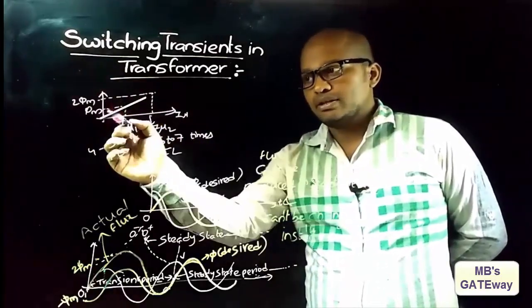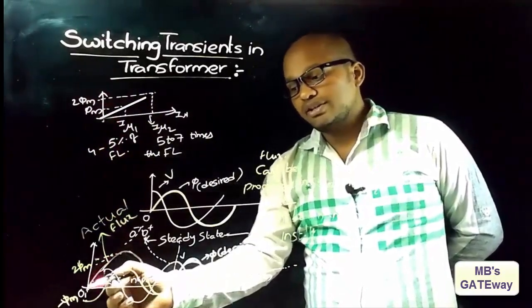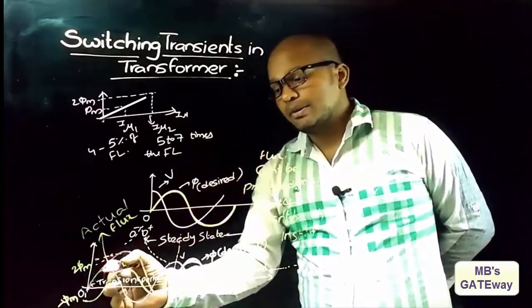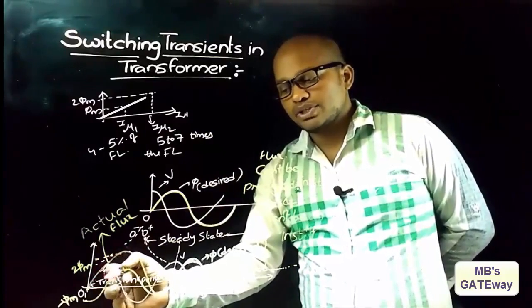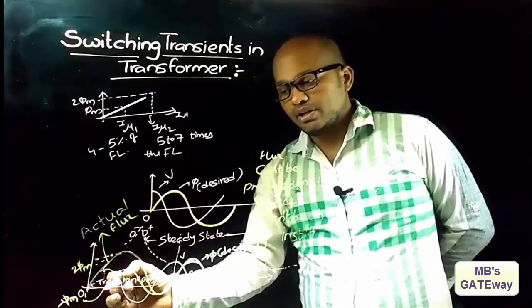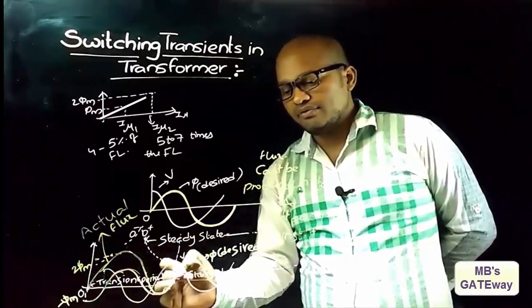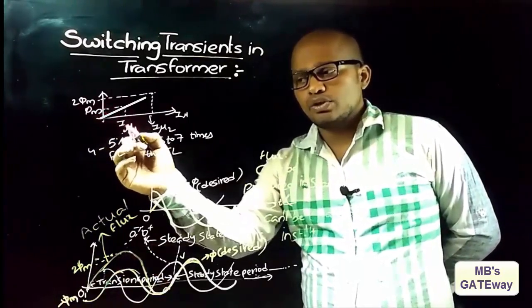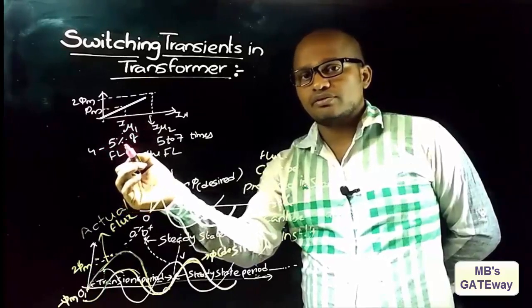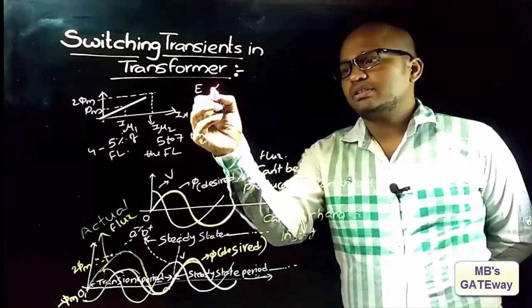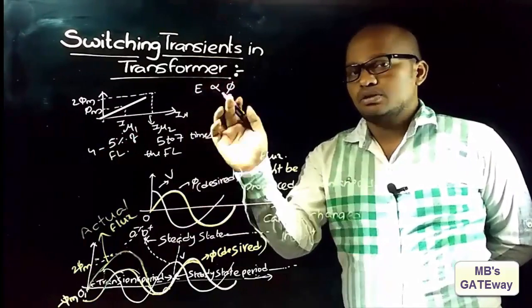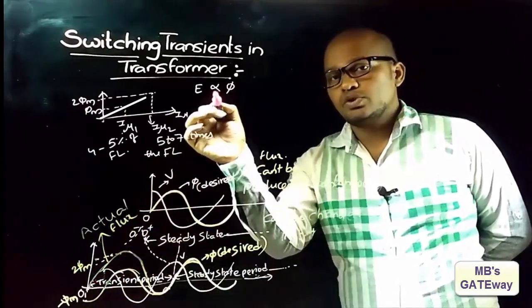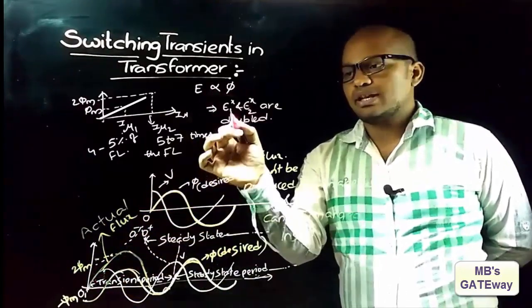There should never be 2φm, and this 2φm results from switching the transformer at the zero voltage instant. To have a less severe effect, we need to switch the transformer at the maximum voltage instant, because at maximum voltage instant flux φ is zero and from there onwards flux follows the desired waveform with a maximum of φm. From the EMF equation, E is directly proportional to flux φ, so if switching is done at the zero voltage instant, we get 2φm, meaning the EMFs are doubled.